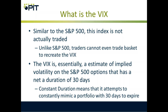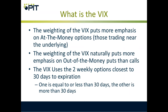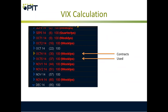The VIX is essentially an estimate of implied volatility on the S&P 500 options that has a net duration of 30 days — it constantly mimics a portfolio with 30 days to expire. The weighting of the VIX puts more emphasis on at-the-money options, those trading near the underlying price. The weighting of VIX naturally puts more emphasis on out-of-the-money puts than calls. The VIX uses two weekly options closest to 30 days to expiration — one is equal to or less than 30 days, the other is more than 30 days. In October, this would have been the two weeklies: the 30-day to expiration and the 37-day.